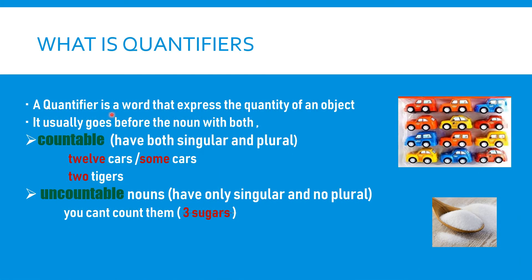A quantifier is a word that expresses the quantity of an object. It usually goes before the noun, with both the singular and the plural noun.